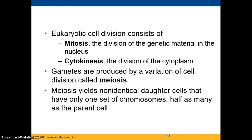Eukaryotic division consists of two parts: mitosis and cytokinesis. Mitosis is the division of the genetic material in the nucleus, and cytokinesis is the division of the cytoplasm. Gametes are produced by a variation called meiosis, which is different from mitosis — meiosis yields four cells that are not genetically identical and have only one set of chromosomes, half as many as the parent cell.